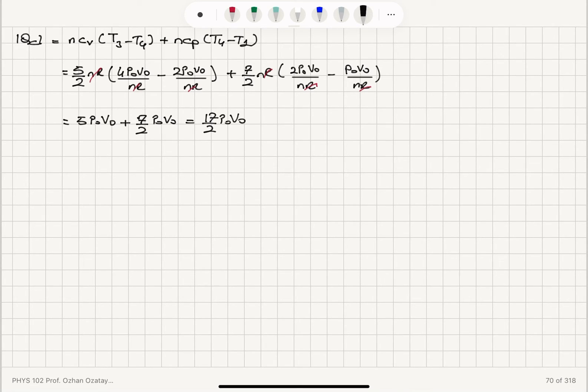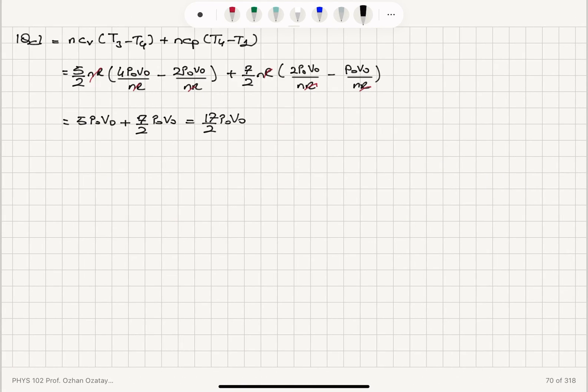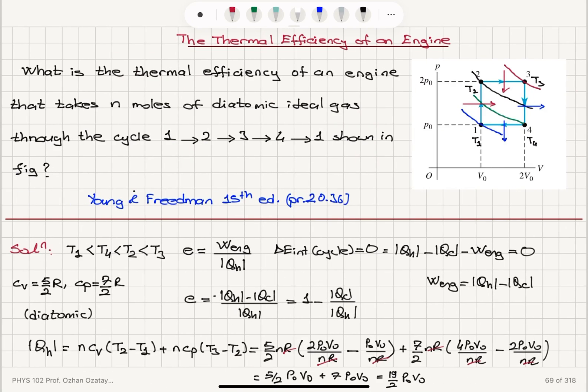Efficiency is 1 minus Qc over Qh. Efficiency will be equal to 1 minus 17 divided by 19. So, efficiency is 2 over 19. That will be the final answer.